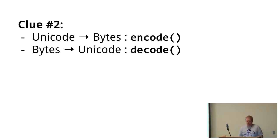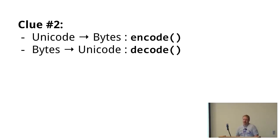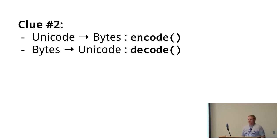Clue number two in our mystery: the process of converting from Unicode to bytes is called encoding, and the process of transforming bytes into Unicode is decoding. I get this confused all the time — I might even say it wrong during this presentation, but remember that.